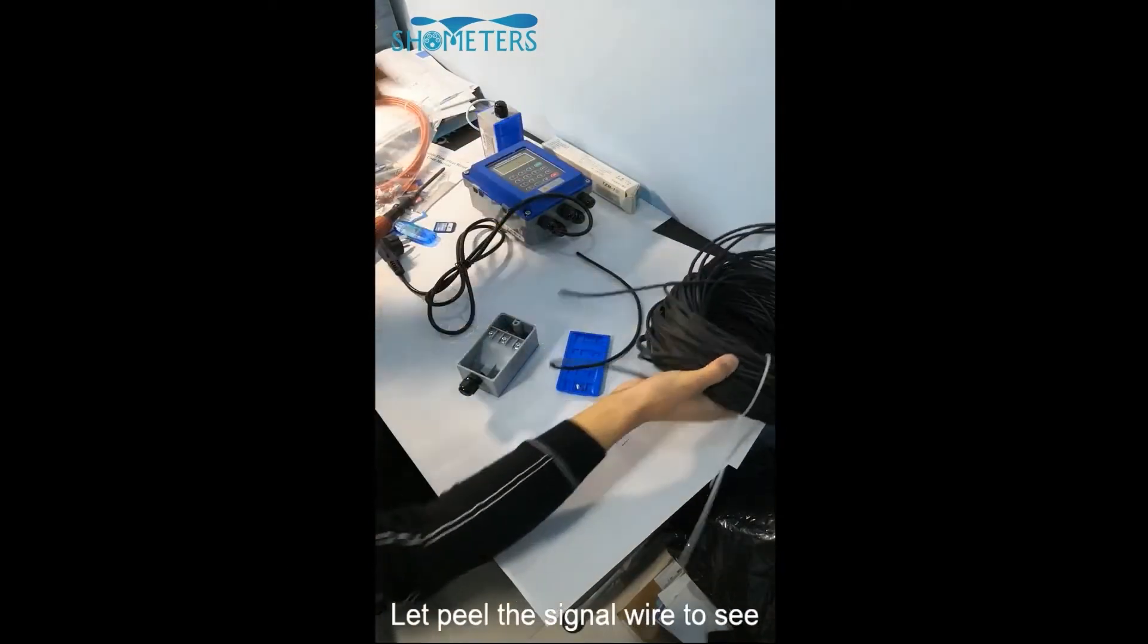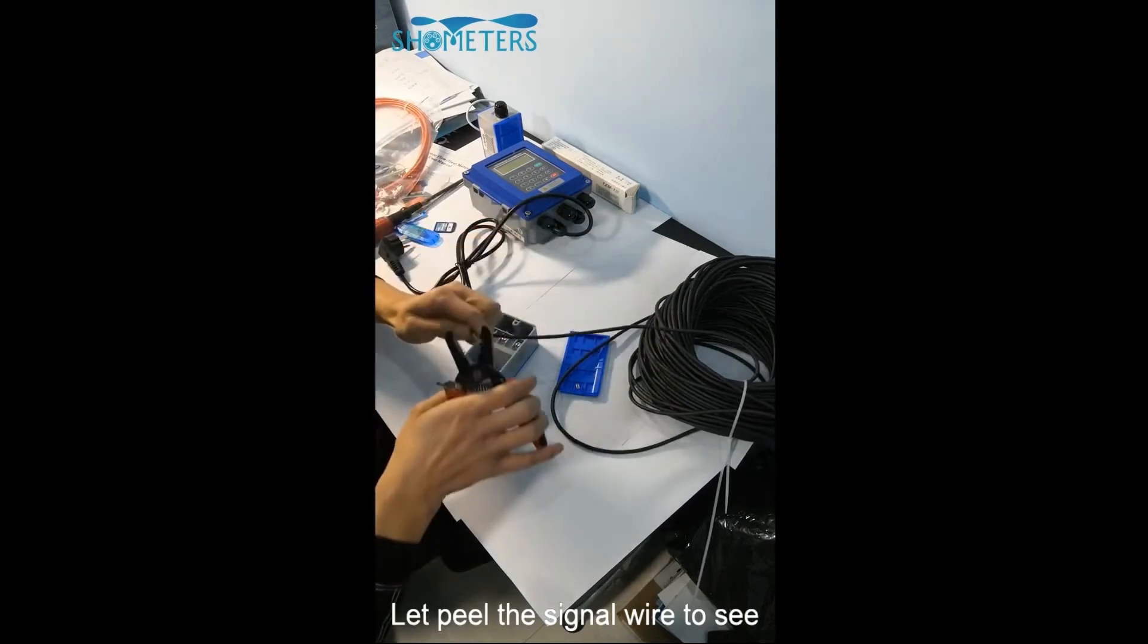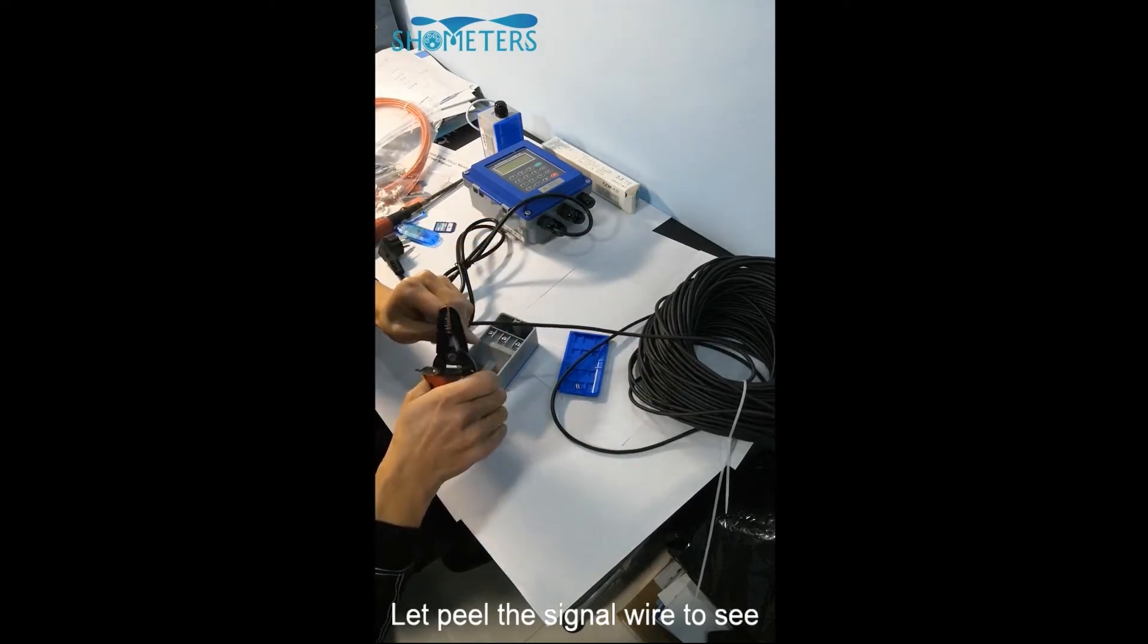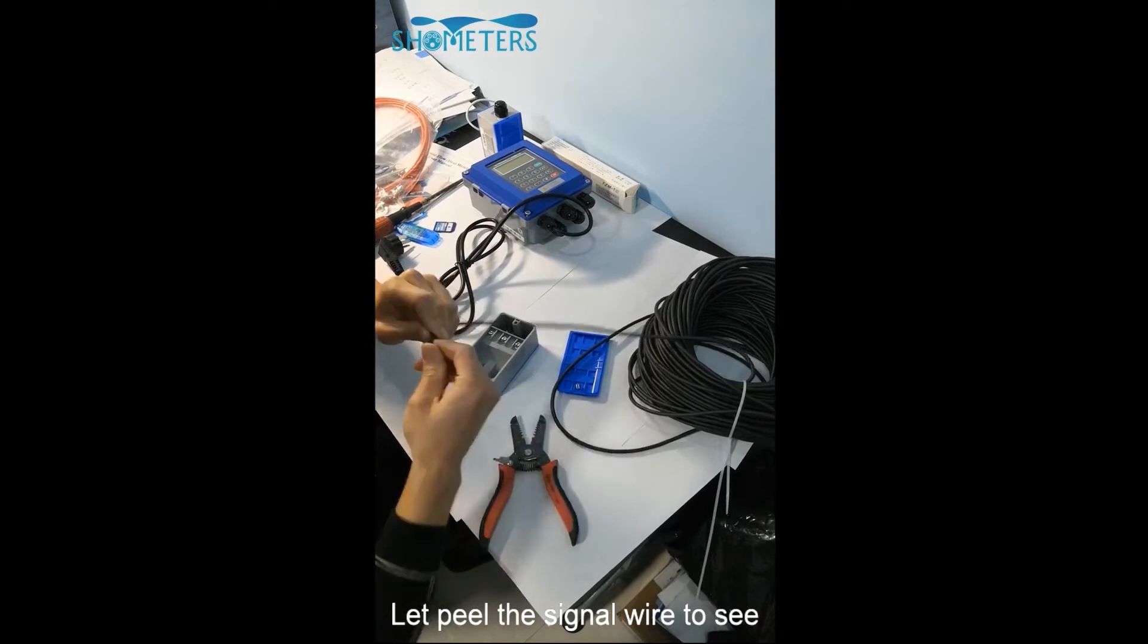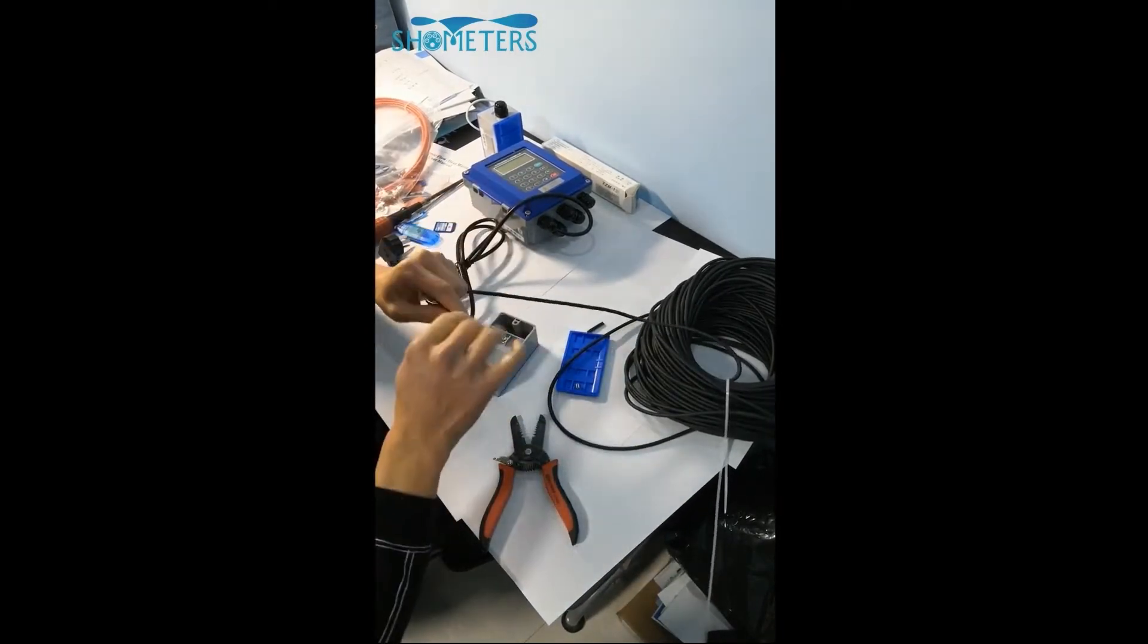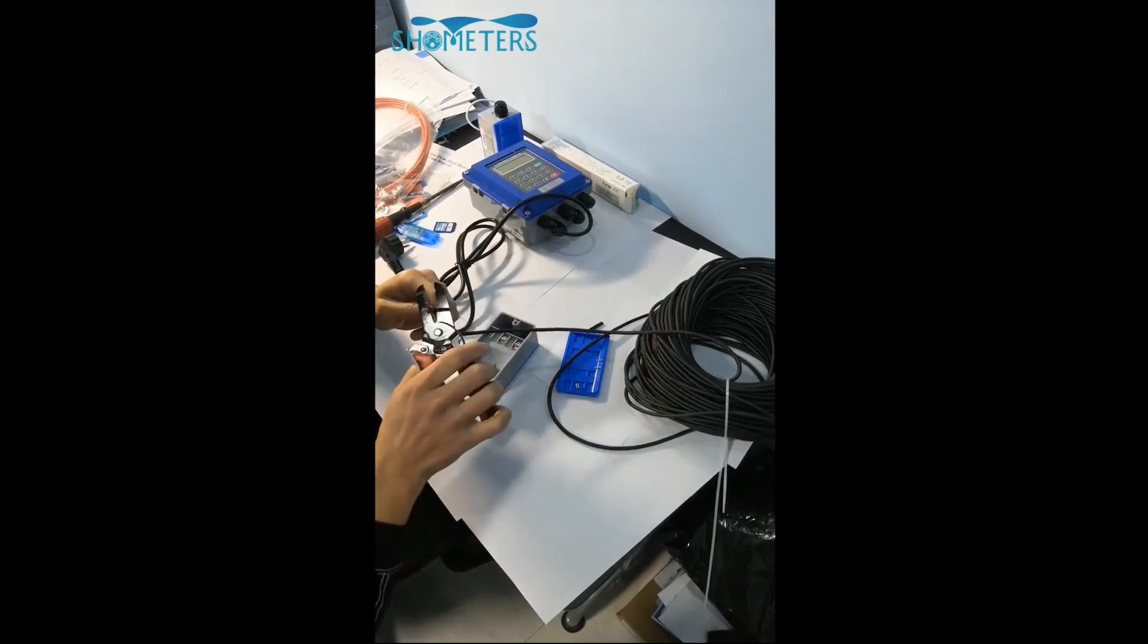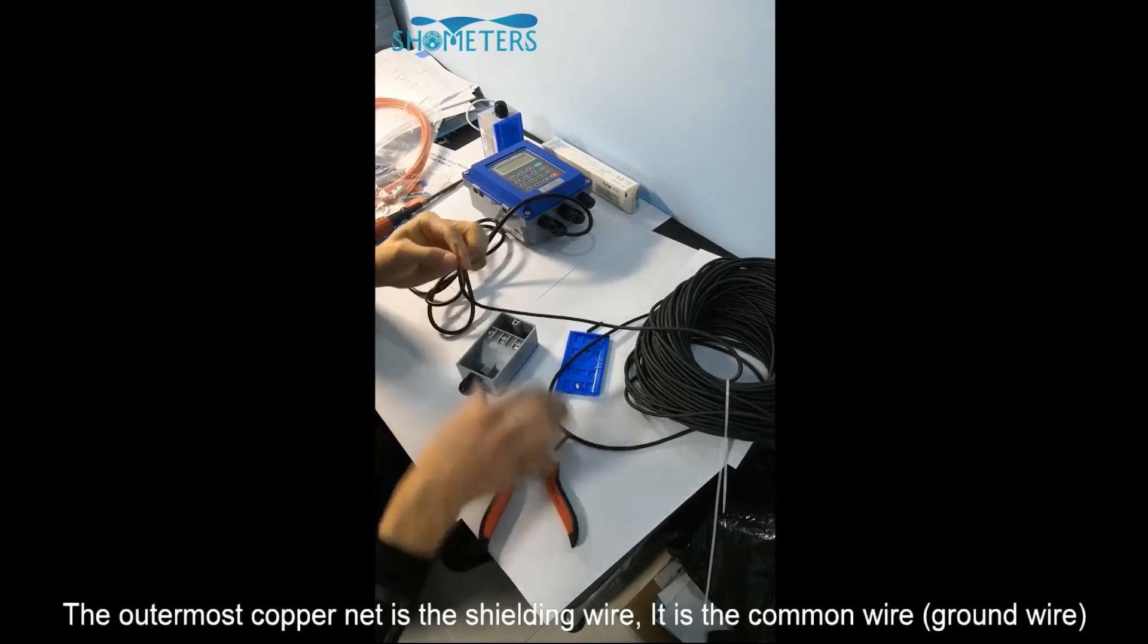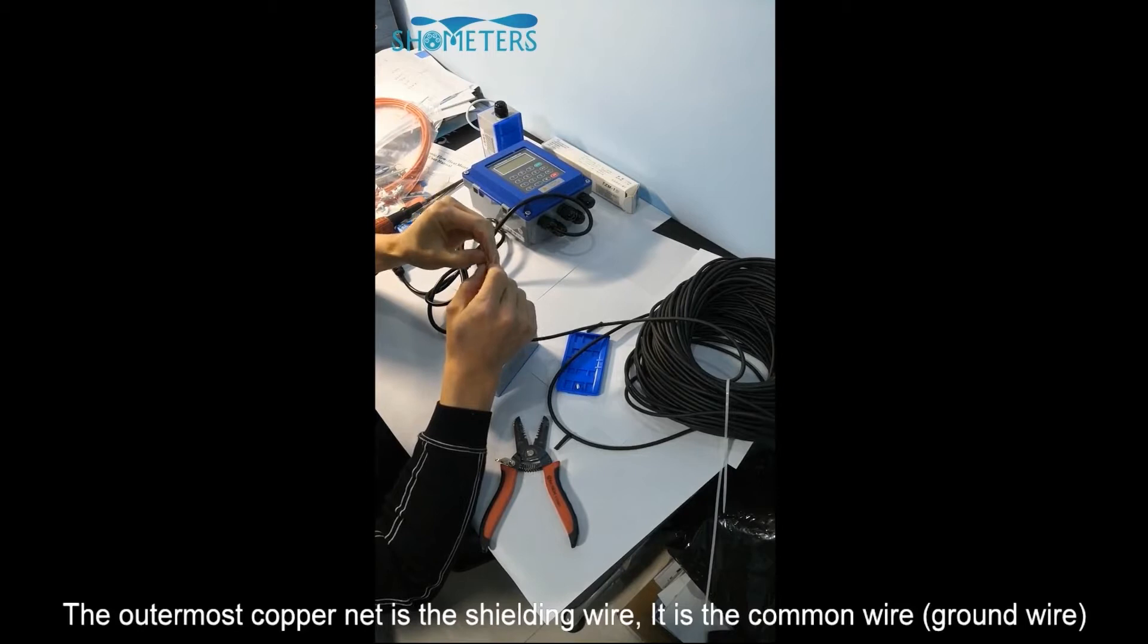Let's peel the signal wire to see. The outermost copper layer is a shielding wire.